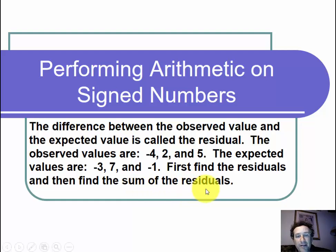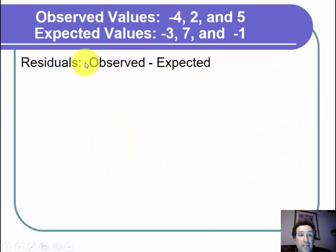Let's start by looking at the residuals. The residuals are the observed minus the expected. For the first residual, I will take negative 4, which is the first observed, minus negative 3, which is the first expected.